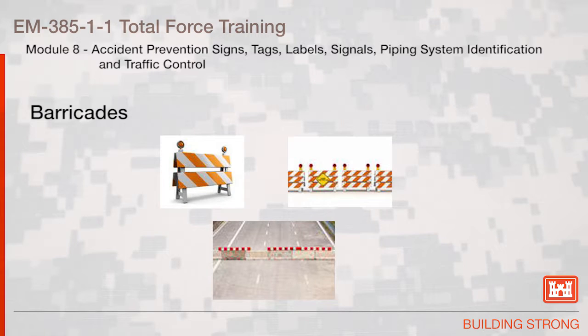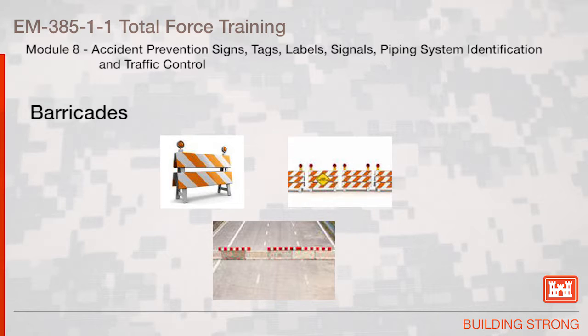Here are examples of several different types of barricades. Barricades are a physical obstruction such as tape, screens, or cones intended to warn of and limit access to a hazardous area. Warning signs provide additional information, such as high voltage, area under construction, crime scene do not cross, or police line or police information.